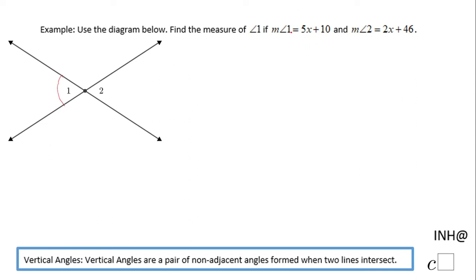If the measure of angle 1 is 5x plus 10 and the measure of angle 2 is 2x plus 46, these two angles you see here, you see I mark them the same way, are congruent.